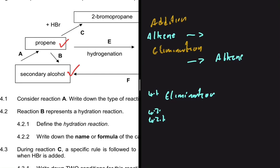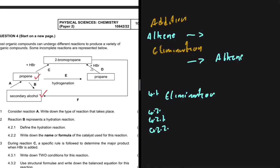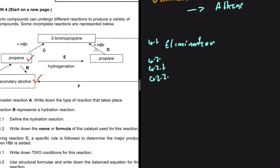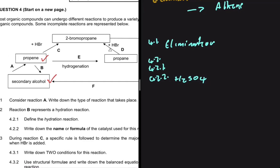That's the definition — the addition of water to a compound. That's what we mean by a hydration reaction: we add H₂O to a compound. For 4.2.2, the catalyst used for a hydration reaction is H₂SO₄ — sulfuric acid.